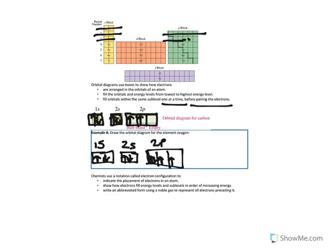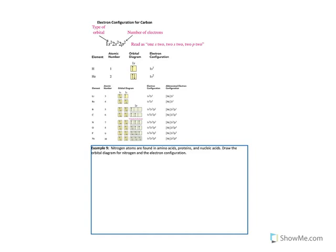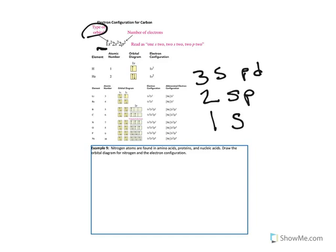We can also use an abbreviated form using a noble gas to represent all electrons preceding it. In an electron configuration, the first number tells you the level — level 1, level 2, level 3 — remembering that level 1 holds an S, level 2 holds an S and a P, and level 3 holds an S, a P, and a D. The second character tells you the type of orbital: S, P, D, or F. The superscript tells you the number of electrons in that particular orbital.